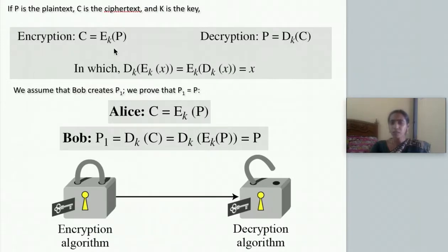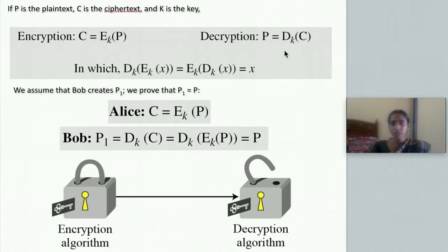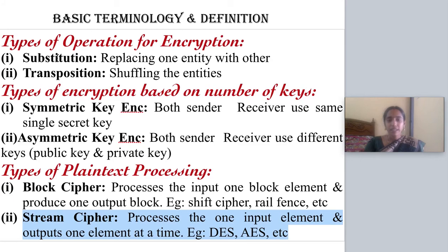You also need to know the symbols. In the encryption process, the ciphertext is denoted by the letter C. The encryption algorithm is denoted as E to the base key, and the plain text is denoted by P. In the decryption process, you retrieve the plain text and the symbol is D to the base K, where C is the ciphertext. In the next lecture, we will be seeing the substitution techniques. Thank you.